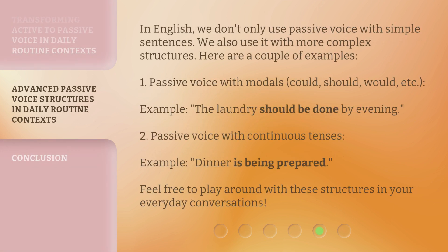In English, we don't only use passive voice with simple sentences. We also use it with more complex structures. Here are a couple of examples. One — Passive voice with modals (could, should, would, etc.). Example: 'The laundry should be done by evening.' Two — Passive voice with continuous tenses. Example: 'Dinner is being prepared.'